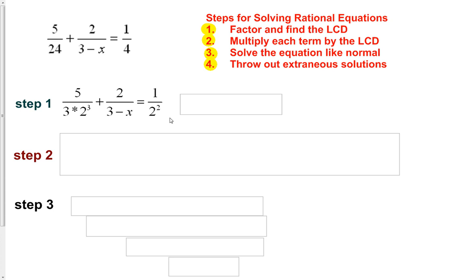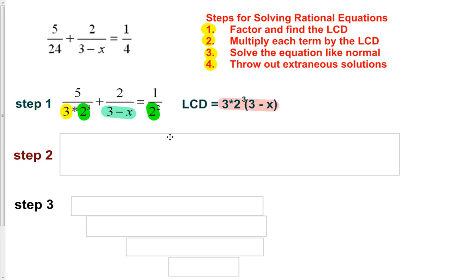Looking at this, we're trying to identify our least common denominator. We have a 3 in the denominator, a 2 to some power appearing a couple times, and the term 3 minus x. Taking the highest power of each: 3 to the first, 2 to the third power, and 3 minus x. So that's our least common denominator.